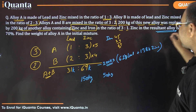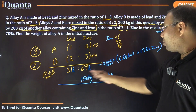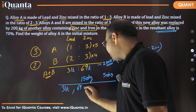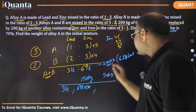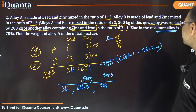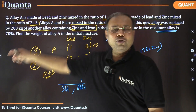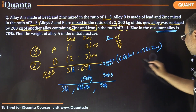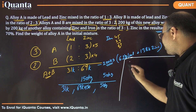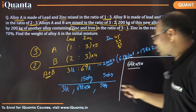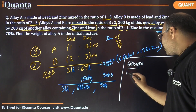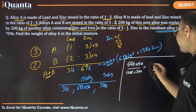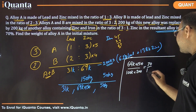The question says zinc in the resultant alloy is 70 percent. After mixing, the resultant alloy has all three components: lead is 31k kg, zinc is 69k plus 150 kg, and iron is 50 kg. Total quantity is 100k plus 200 kg. The zinc quantity — that is 69k plus 150 — is 70 percent of the total, which equals 7 divided by 10.